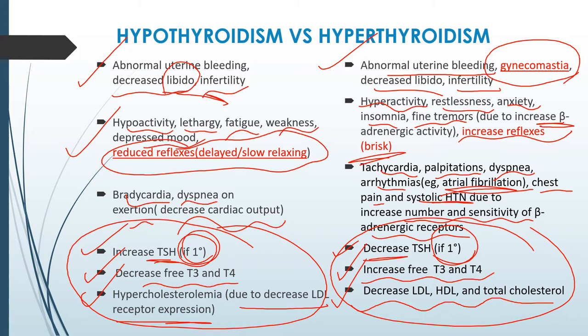Primary hypothyroidism means the problem originates in the thyroid gland itself. Secondary and tertiary cases arise from other causes or organs. Please review the previous videos for detailed descriptions.